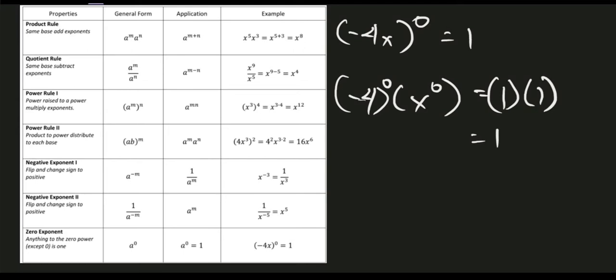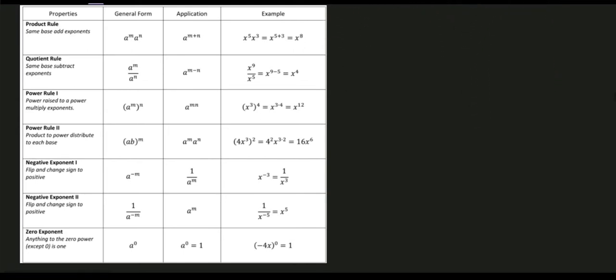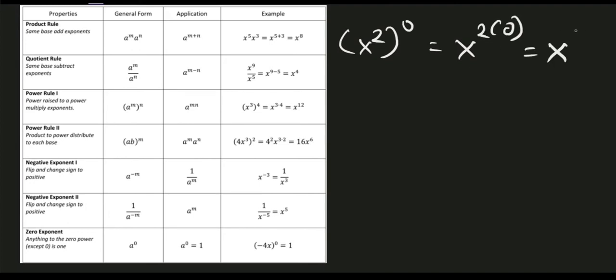Any term or base raised to zero equals 1. For example number 2, the quantity x squared raised to zero: applying the power rule, multiply the exponents — 2 times 0 equals 0 — so we have x raised to 0, which equals 1.